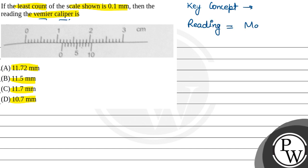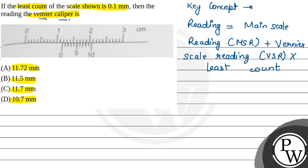that is called MSR, plus vernier scale reading, that means VSR, multiplied by least count. So this is the main formula which we will use to solve the question.